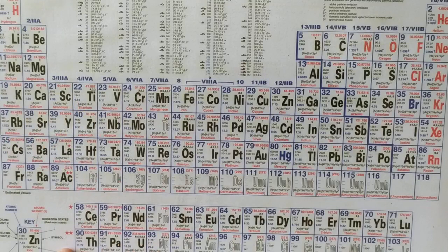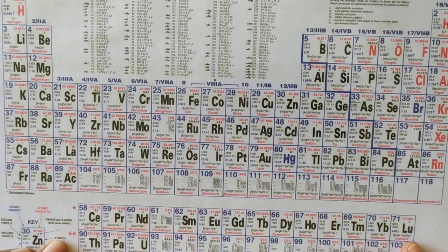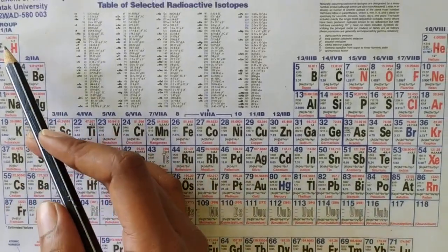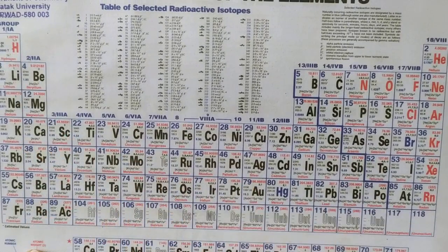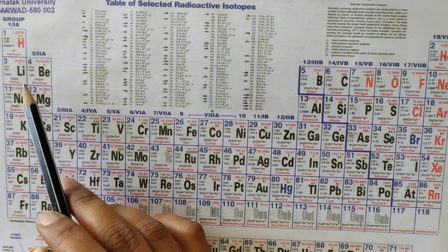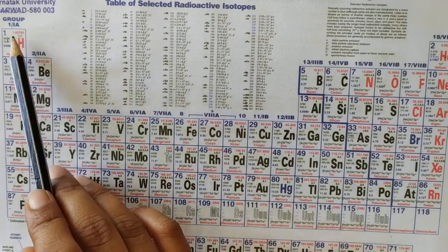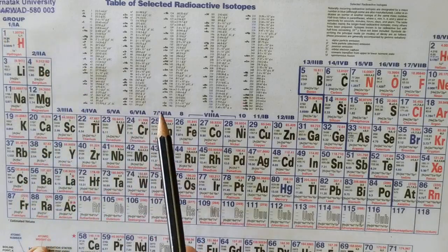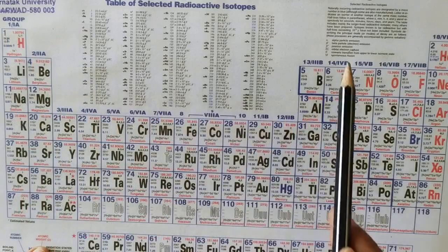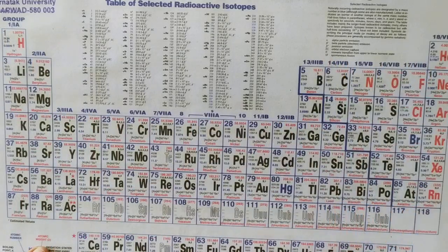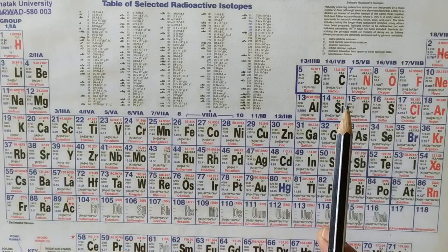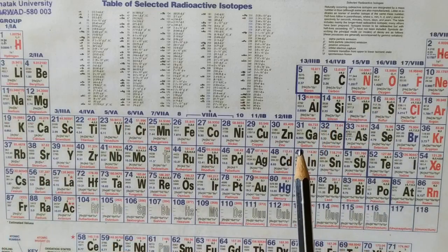By knowing the number of shells or the electronic configuration of an element, we can predict which period it belongs to. Now we will move to the description of groups. Horizontal rows are known as periods and vertical columns are known as groups. In the periodic table, we have 18 groups.